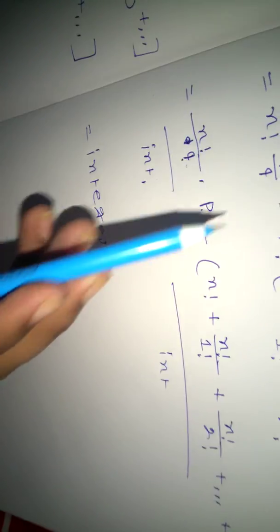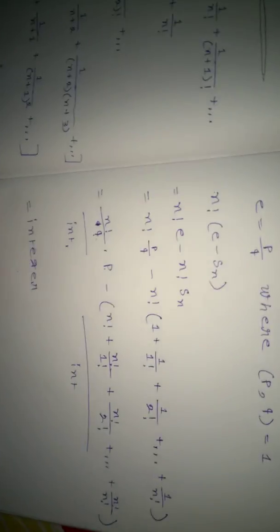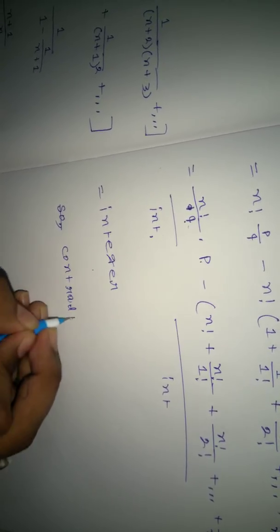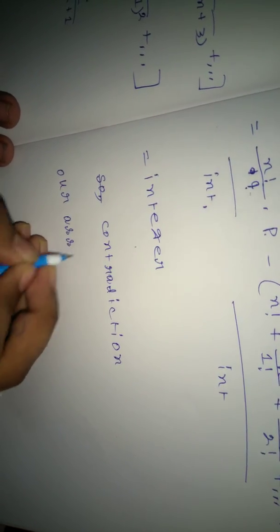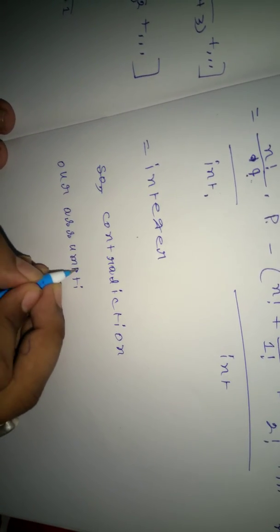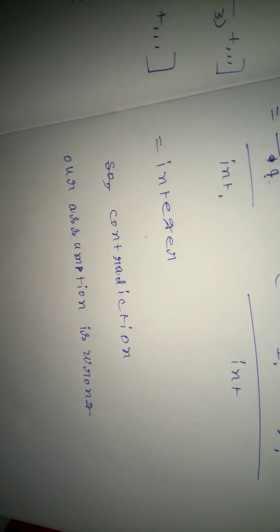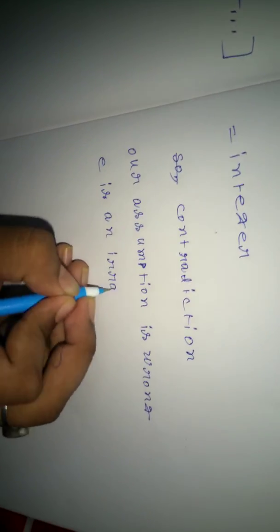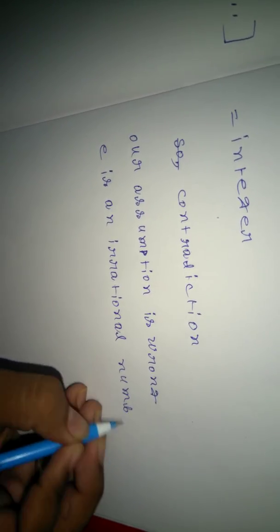Now here we get that n! · (e minus Sn) is an integer. But here we proved that n! · (e minus Sn) is a fraction. Then a contradiction arrives. So our assumption is wrong — e is not a rational number. Therefore, e is an irrational number. And hence the proof.